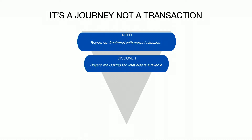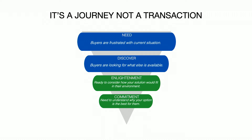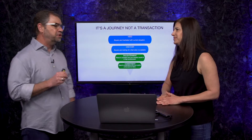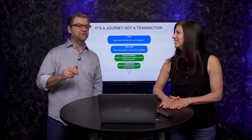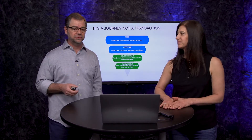Step two is discovering what buyers are looking for and what else is available to them. The third step is enlightenment — we've got a need, we're looking at what's available, and now we're ready to consider our options and how you might help solve our problem. That leads us to the last part: commitment. They need to understand how you're going to specifically meet their needs and help them solve the problem they're having with your product or solution.